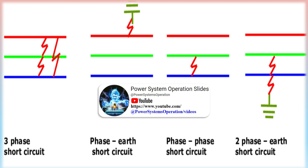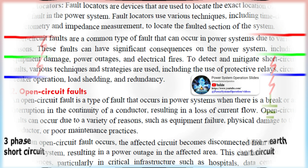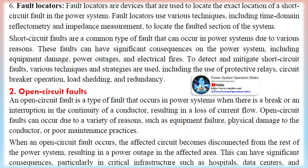Short-circuit faults are a common type of fault that can occur in power systems due to various reasons. These faults can have significant consequences, including equipment damage, power outages, and electrical fires. To detect and mitigate short-circuit faults, various techniques and strategies are used, including protective relays, circuit breaker operation, load shedding, and redundancy.